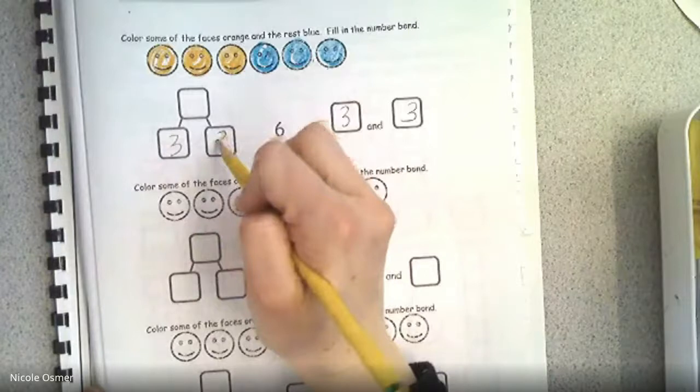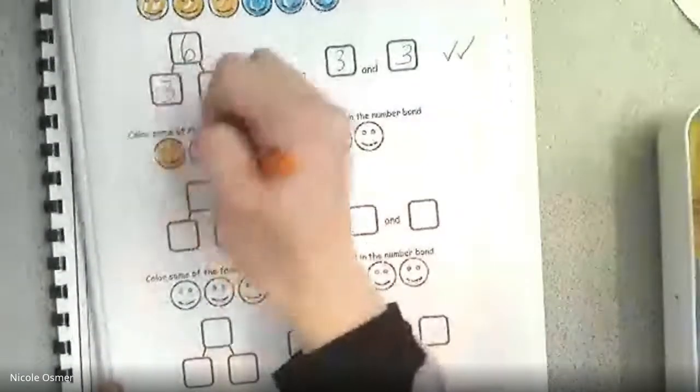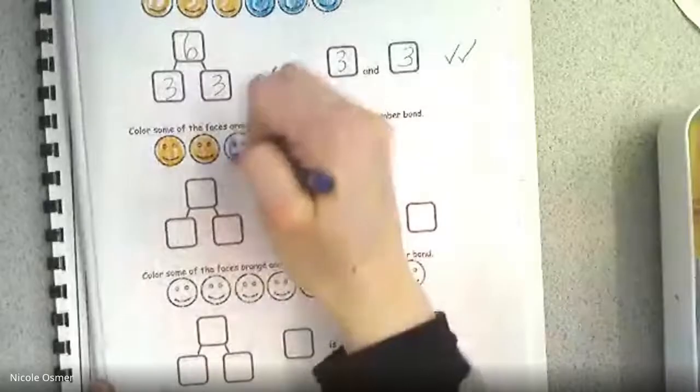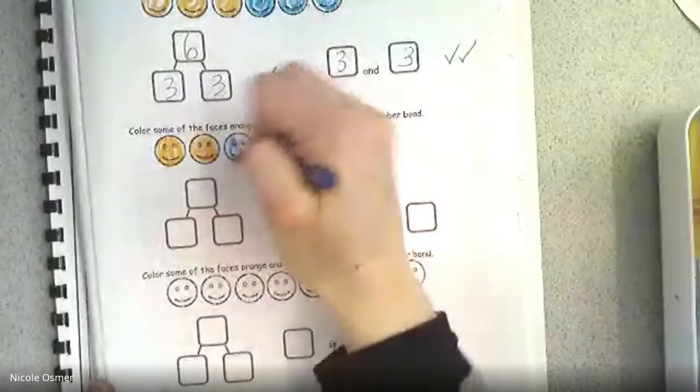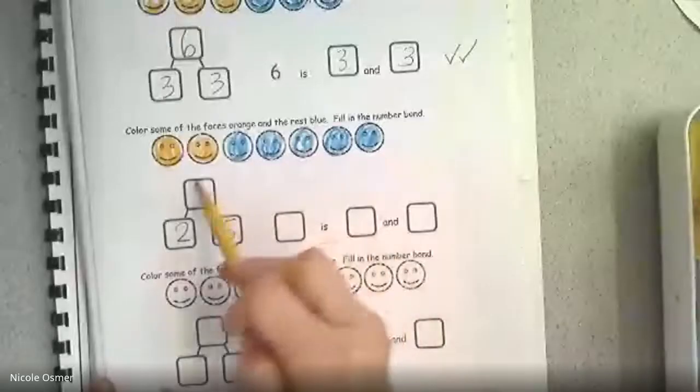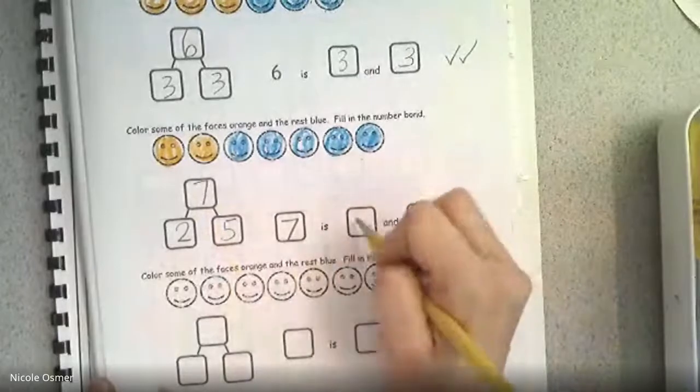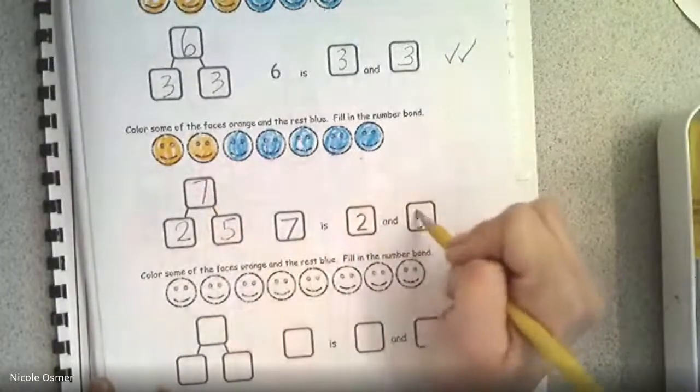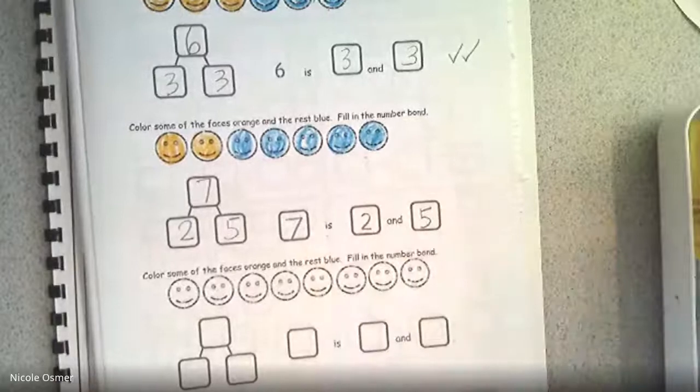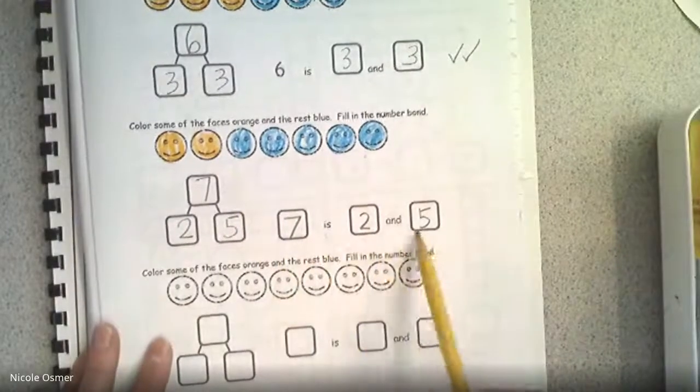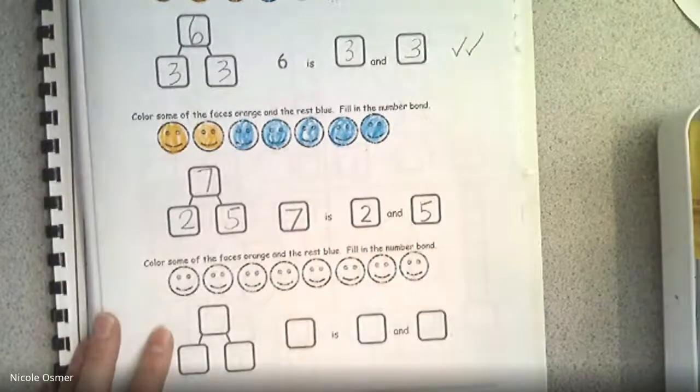Color some of the faces orange and blue again. You get to pick, you don't have to do exactly what I'm doing. I'm coloring two orange. One, two, three, four, five blue. How many is that? Two and five is one, two, three, four, five, six, seven. Two plus five equals seven. Seven is two and five. See how that makes sense? It's putting the two parts together here and now we're reading it in a sentence. You're using your sight words is and and.